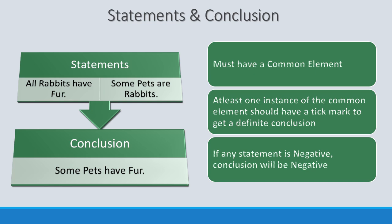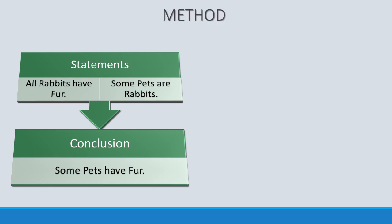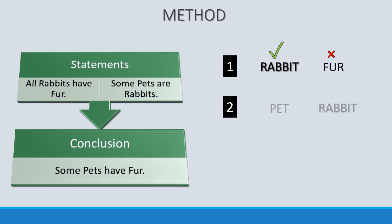This is called the Aristotle method of solving syllogisms. We have two statements and we have to get the conclusion. The first statement is 'All rabbits have fur', so the symbol will be a tick over rabbit and a cross over fur. For the second statement, 'Some pets are rabbits', the symbols will be a cross over pet and a cross over rabbit. As we can see, we have a common element: rabbit.